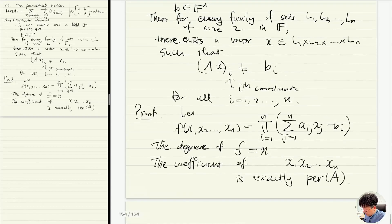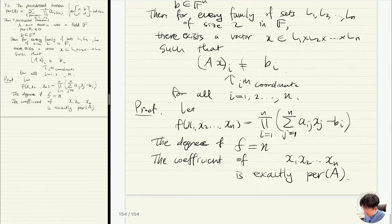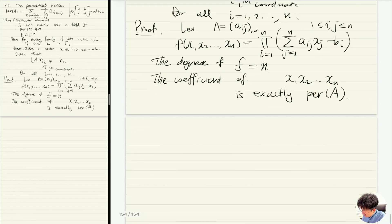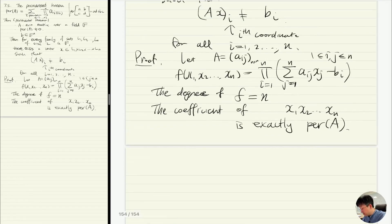A is actually the matrix a_ij. So if the permanent is non-zero, that means the coefficient is non-zero. So whenever you are given two choices, whenever I'm given two choices for each variable, then there will be some assignment where this polynomial is non-zero.